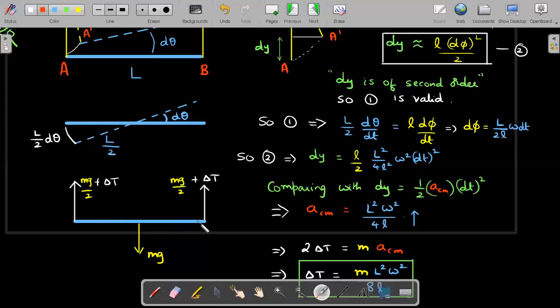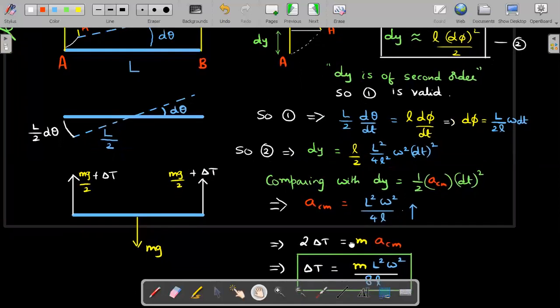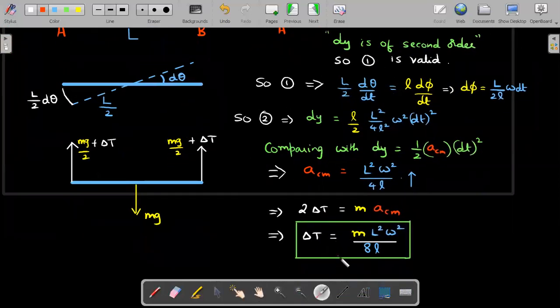Now for the horizontal rod on its FBD before you gave the twist, each tension would be equal to mg by 2 and mg by 2 balancing the weight. So the increment in tension, each one of them is delta T and delta T, that 2 delta T is responsible for production of this a cm in the vertical direction. So 2 delta T is equal to M into this a cm and therefore increment or increase in tension in each rod or each thread, I should say, is coming out to be this number.